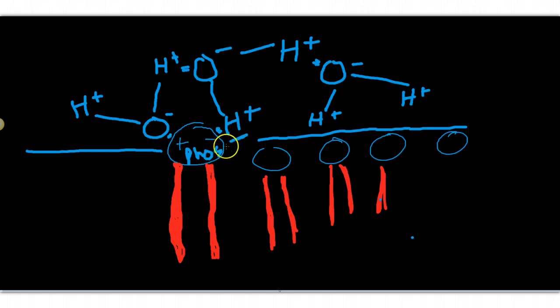So, the polar phosphate end will have the positive side of it nestle up to an oxygen and a negative side of it nestle up to the hydrogen end, and it will fit itself within the lattice structure of the water.